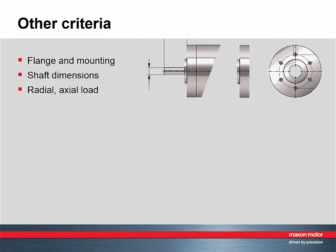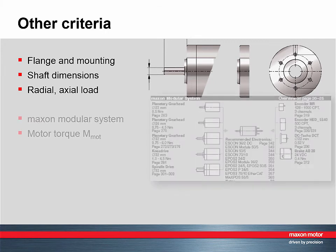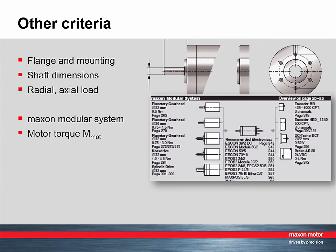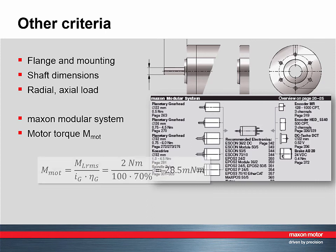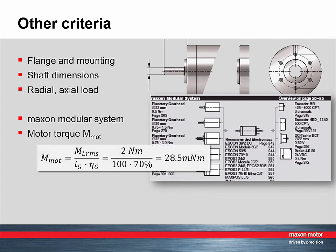In addition to these considerations about torque and speed, there are other criteria for the selection of gearheads. The first one is the mechanical interface: how is the gearhead going to be fixed, and how about the shaft diameter and length? Is a flat or even a keyway needed for connecting to the load? How large are the radial and axial loads on the shaft? Check the Maxon modular system for suitable motor types in combination with this particular gearhead — is it possible to find matching motors with sufficiently high torque? In our case, the RMS motor torque amounts to about 28 mNm.